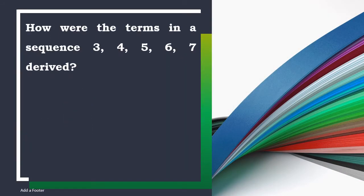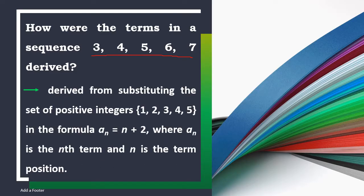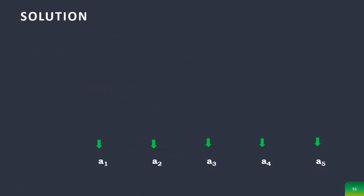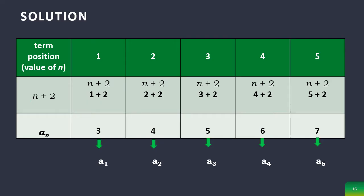How were the terms in the sequence 3, 4, 5, 6, 7 derived? We derived them by substituting the set of positive integers 1, 2, 3, 4, 5 into the formula a sub n equals n plus 2, where a sub n is the nth term and n is the term position. For the first term, when n equals 1: substitute into n plus 2, giving 1 plus 2, which equals 3. So 3 is our first term.